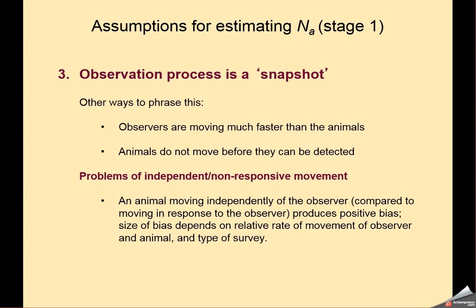The estimated value of p appears in the denominator of our equation for estimating n sub a. So if p sub a is too small, then what we end up with is this positive bias in our estimate of n sub a.